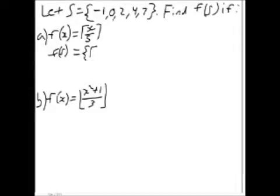Here's a harder example. Let S equal the set of negative 1, 0, 2, 4, and 7. Find f of S if f of x is the ceiling of x over 5. So f of S will equal the set of the ceiling of each individual term. We simplify that and get f of S is the set of 0, 0, 1, 1, and 2.